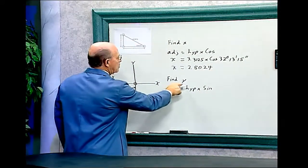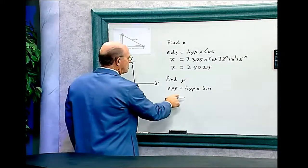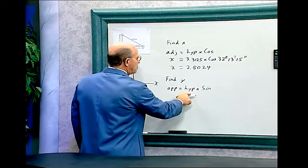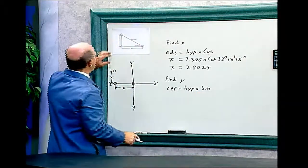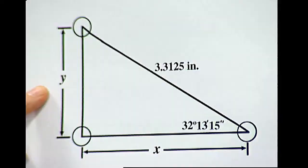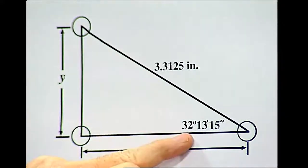And now we want to find the y-dimension. And the y is opposite equals hypotenuse times sine. So let's look at this chart here again. And this is opposite. We want to find the y, and it's hypotenuse times sine of this angle.